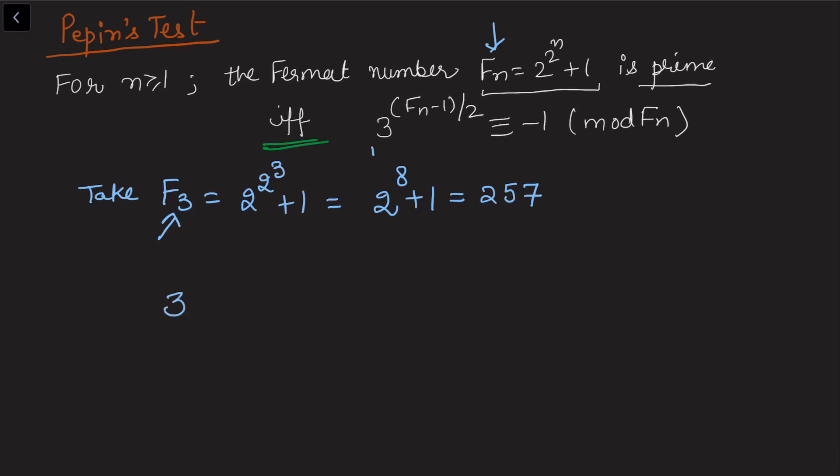We want to check if the congruence holds. If it does, F3 is prime. So 3^((257-1)/2) = 3^128 = (3^3) · (3^5)^25 ≡ 27 · (3^5)^25. Since 3^5 ≡ -14 (mod 257), this is congruent to 27 · (-14)^25 (mod 257).